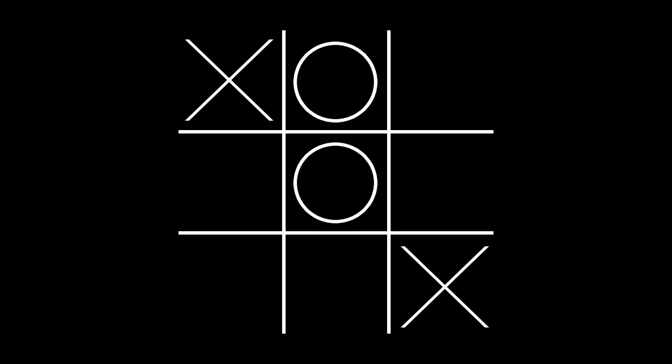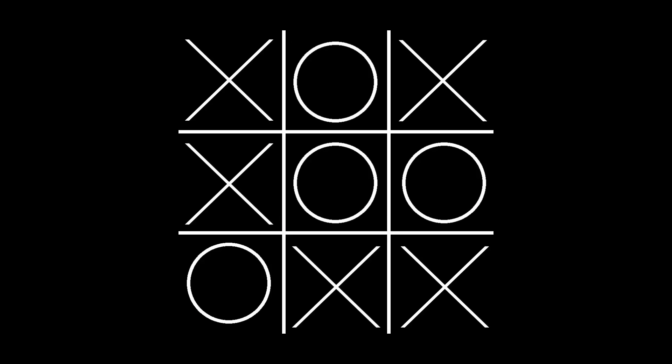If O responds in one of the edges, it's destined to be a cat's game with the players taking turns blocking each other's winning moves. On the other hand, if O responds with one of the inviting corner positions, they're destined to lose because X will surely respond in the opposite corner and create a fork.